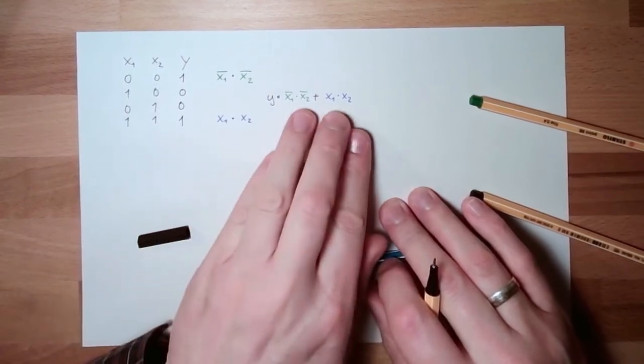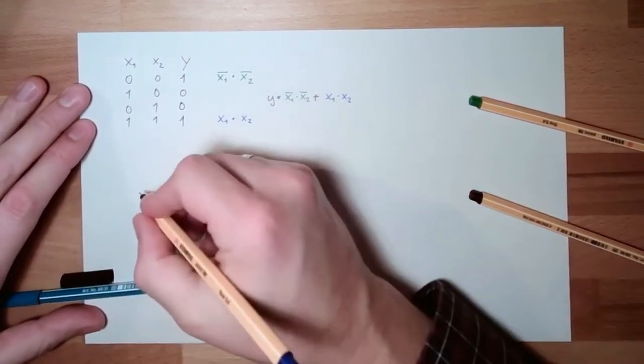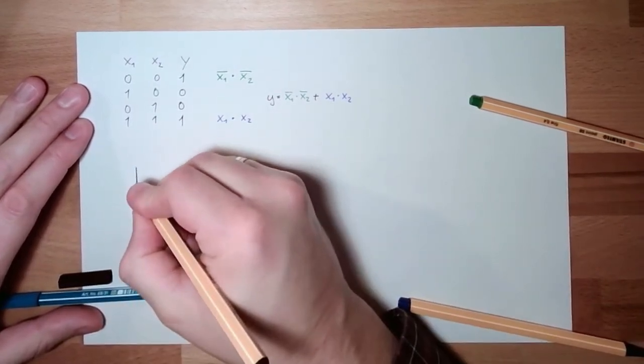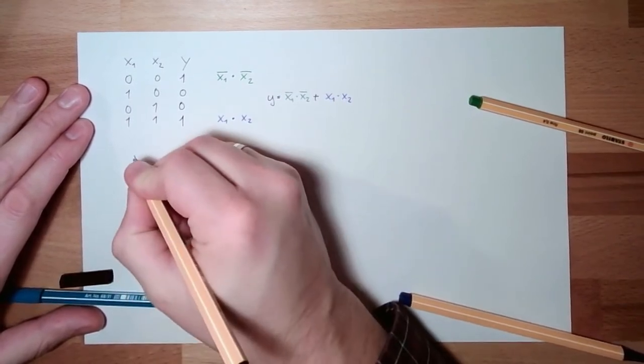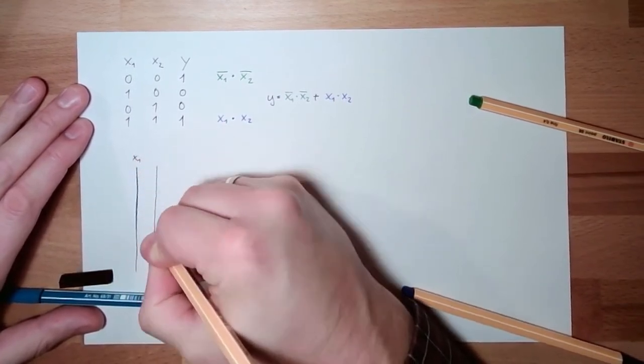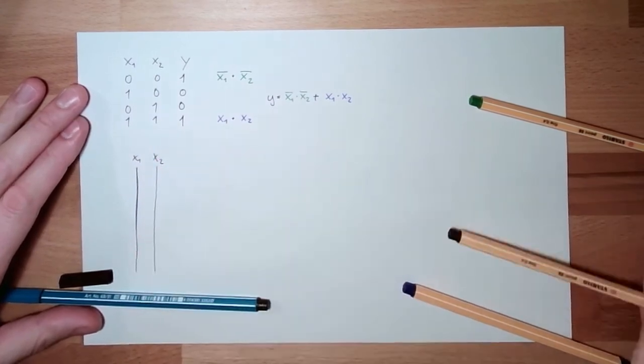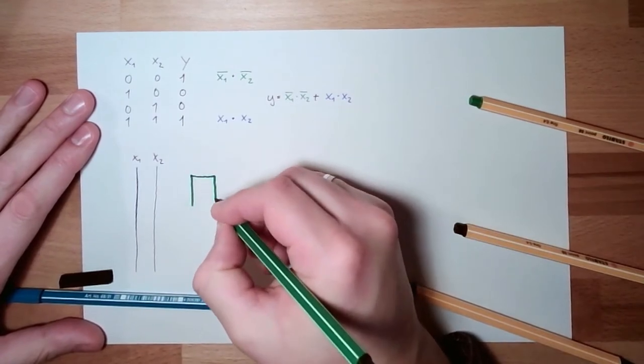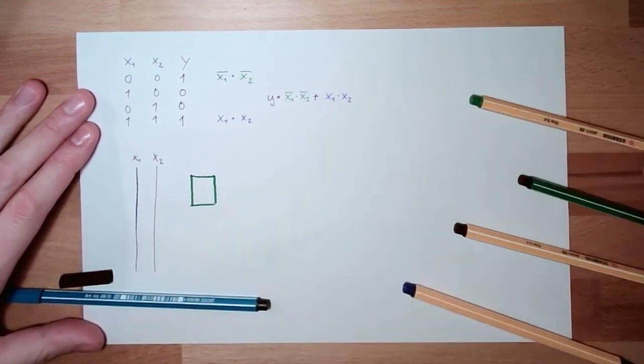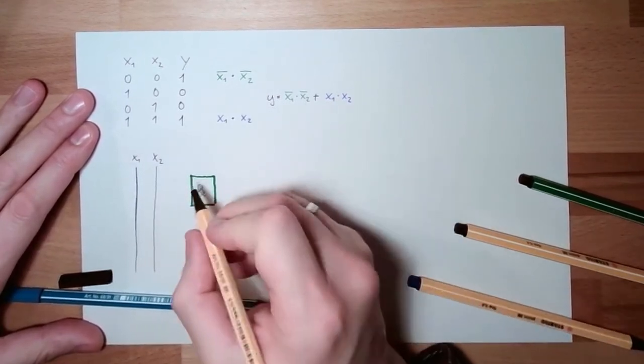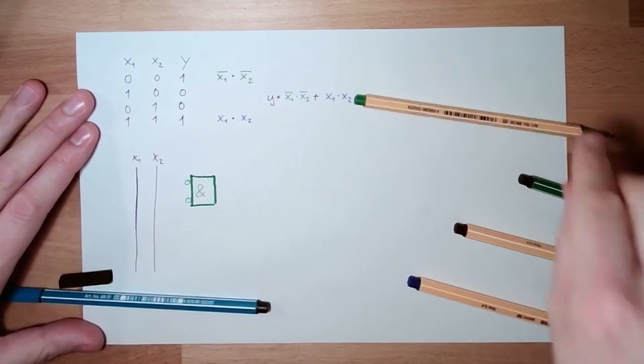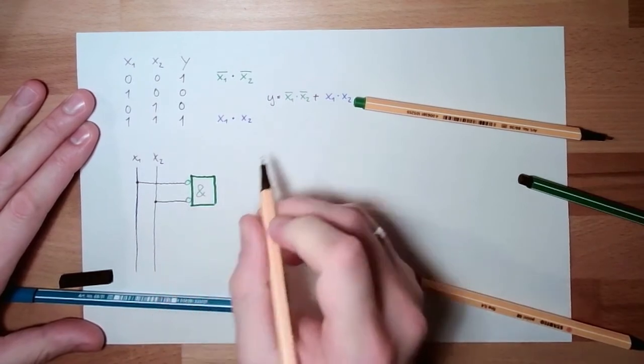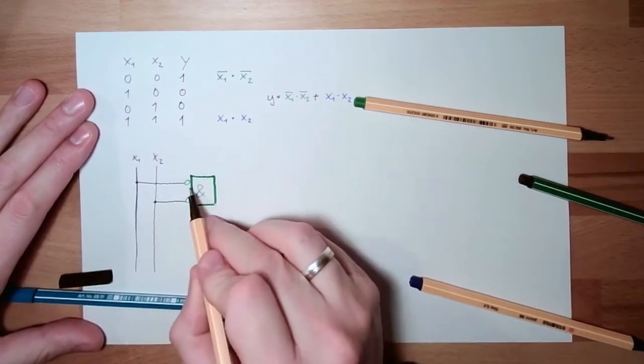And now how to transfer this into a logic circuit? Here, I will use the black color maybe for this common part. Here I have an x1, here I have the second input x2. I need here an AND. So one block, this is an AND. The inputs are inverted. And one input is x1, and the second input is x2. It's this part, not x1 and not x2.